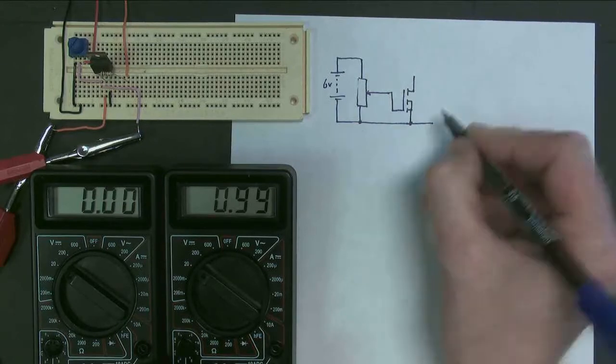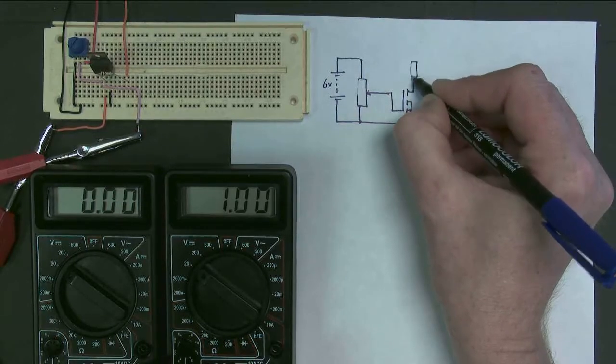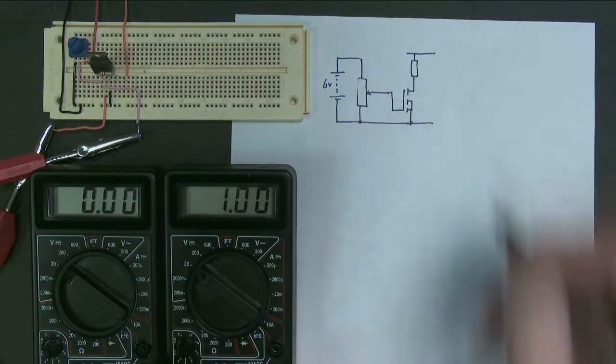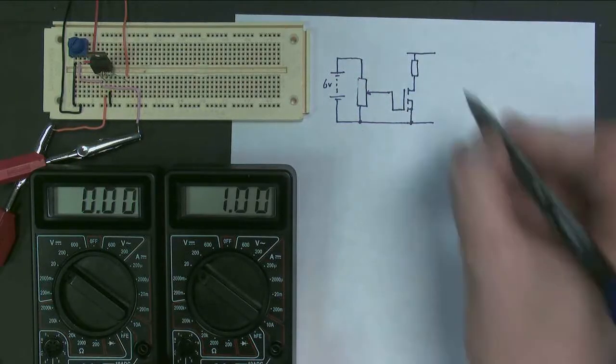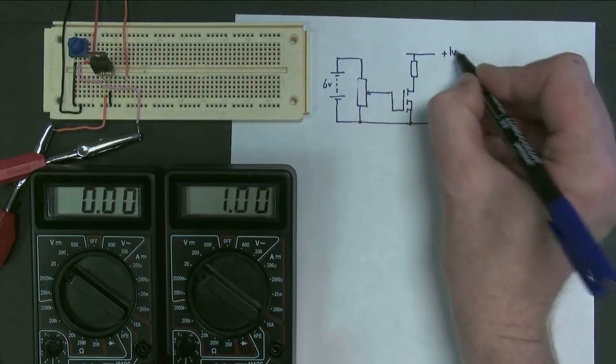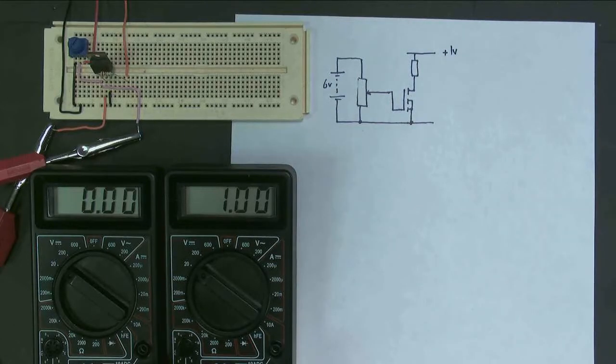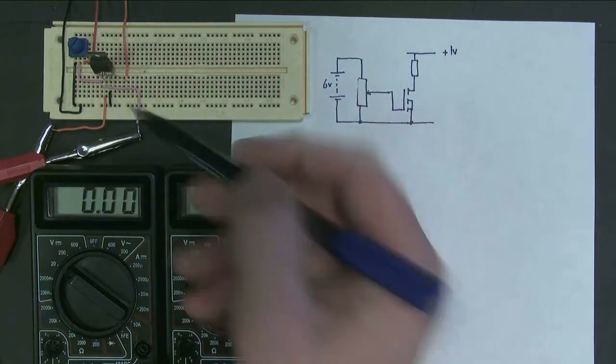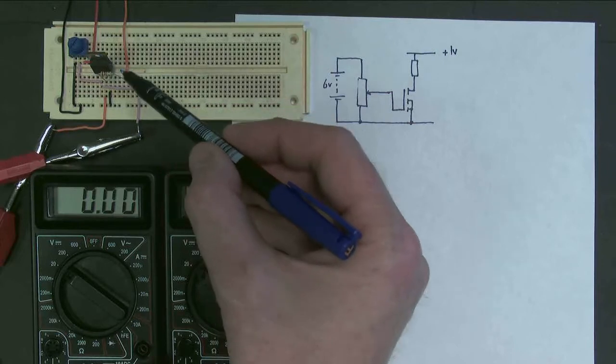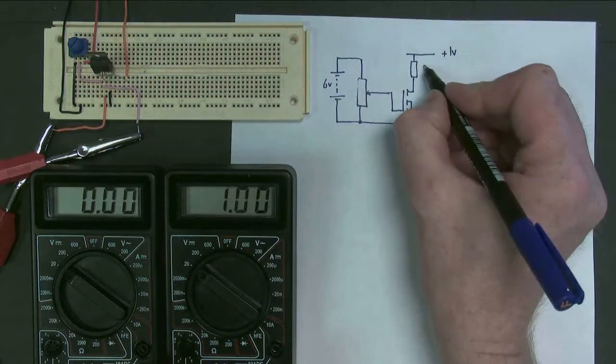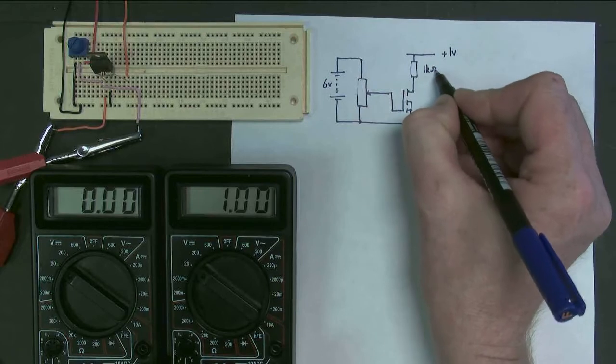But it's also connected to a resistor, and that is connected to a power supply. And the power supply in this case is plus 1 volt, exactly 1 volt. So that's what we have here. Here's the MOSFET. Here's the resistor. The resistor value is 1 kilo ohm.